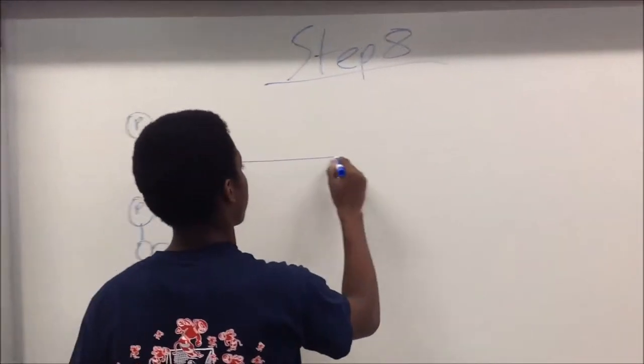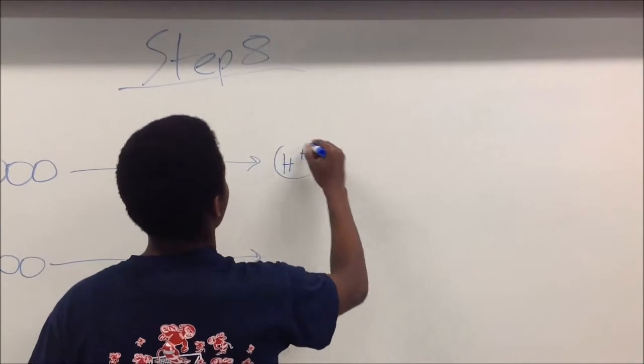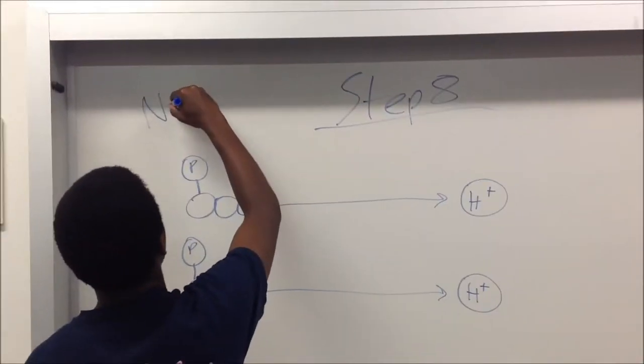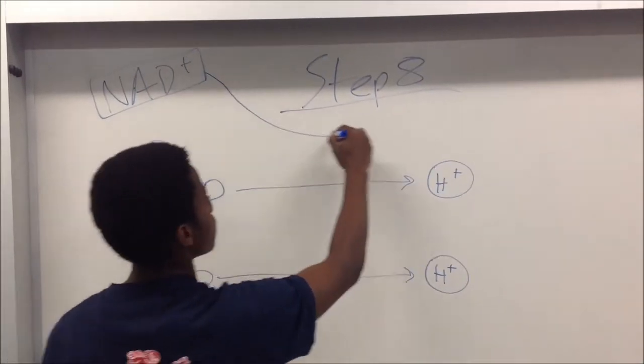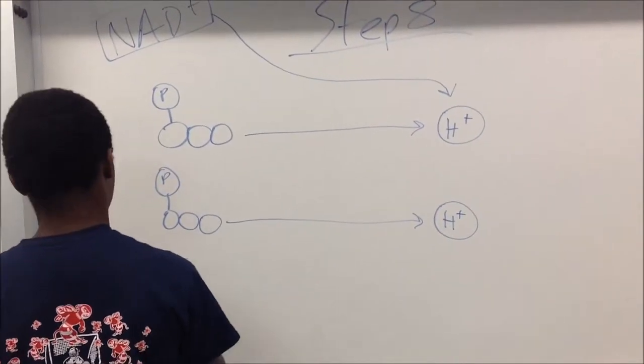There are two H-plus molecules present. Coenzyme NAD-plus comes in and accepts the H-plus. This creates NADH, two in total.